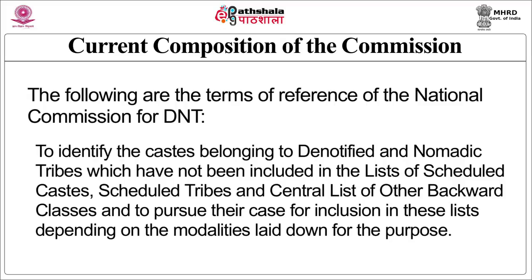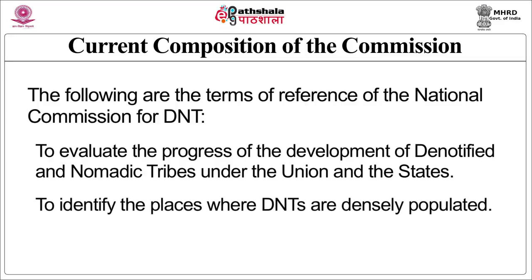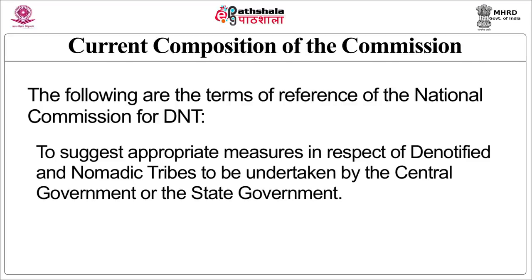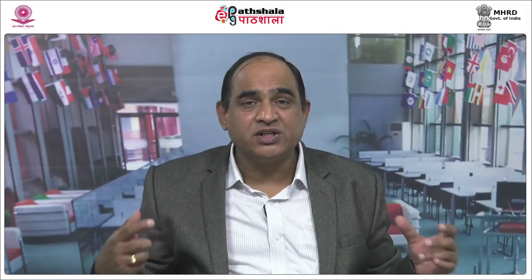The terms of reference of this commission include: preparing a state-wise list of castes belonging to denotified and nomadic tribes; identifying castes belonging to denotified and nomadic tribes in the lists of SCs, STs, and central and state lists of Other Backward Classes; identifying castes not yet included in these lists and pursuing their inclusion; evaluating the progress of development of denotified and nomadic tribes under the union and the states; identifying places where these communities are densely populated and suggesting appropriate measures; and undertaking any other tasks assigned by the Ministry of Social Justice and Empowerment.